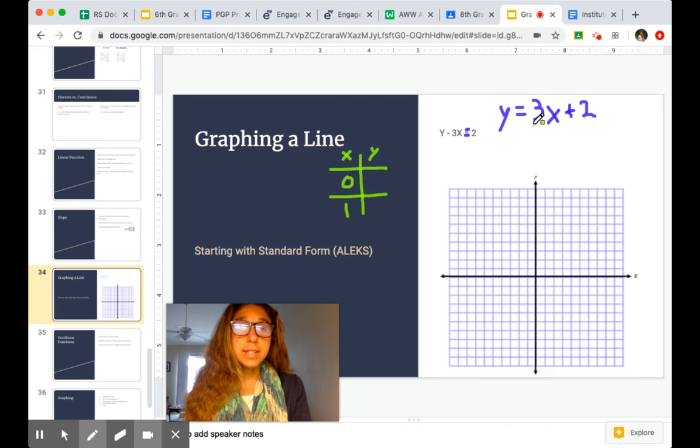So when x equals 0, 3 times 0 is 0. So we're left with a 2, which we also know just from y equals mx plus b, that that's going to be our y-intercept. And then if x is 1, we've got 3 times 1, which is 3, plus 2 is 5.